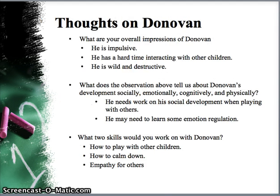This observation gives us a lot of information, but let's think about what it tells us about Donovan. Your overall impressions may be that he's very impulsive, has a hard time interacting with other children, and seems wild and destructive. Developmentally, the observation tells us he might need to work on social development, emotional regulation, how to play with other children, how to calm down, and empathy for others.